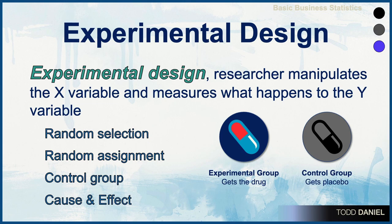When we do good experimental design, we have random selection — randomly selecting who participates and then randomly assigning those participants to either the experimental or the control group. In good experimental design, we have a control group. And because we have both an experimental and a control group in which the only difference is the presence or absence of a drug, we are better able to establish a cause and effect relationship between the two variables.